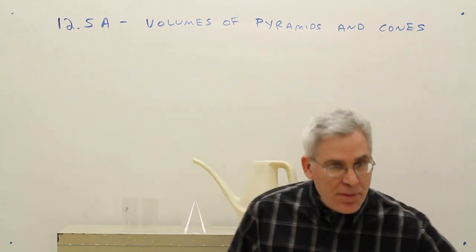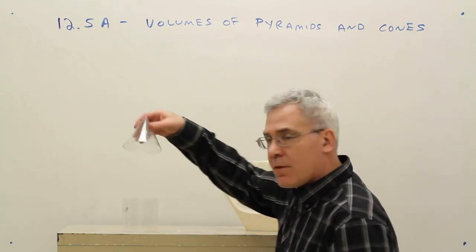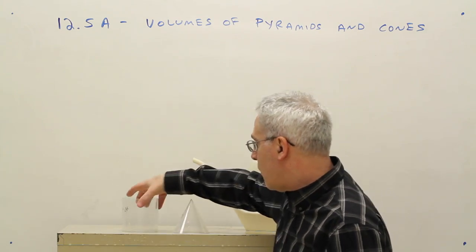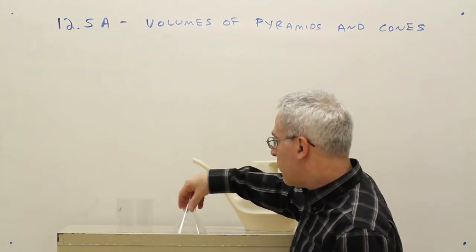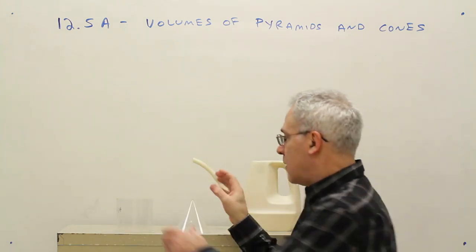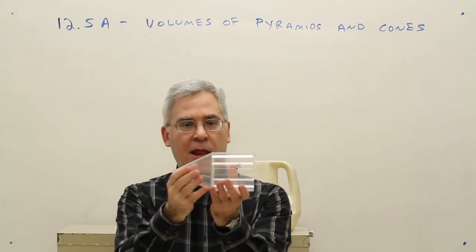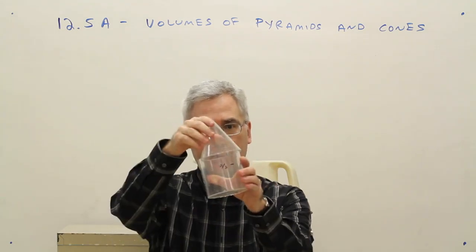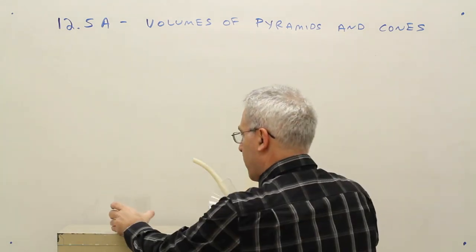We're going to do the same thing with the volume of a cone and a cylinder. Notice, once again, they've got about the same height and they've got the same base area. Let's try to find the ratio.